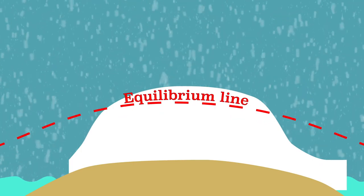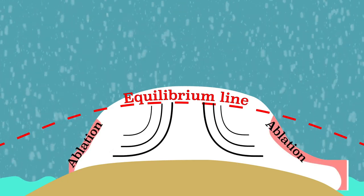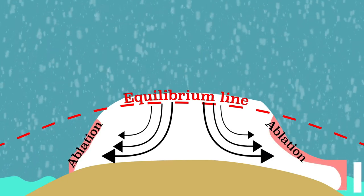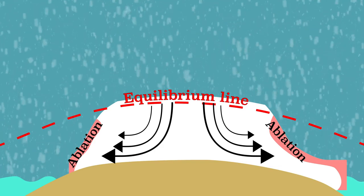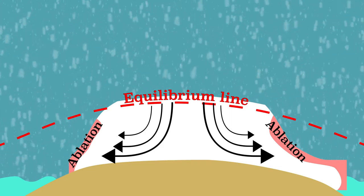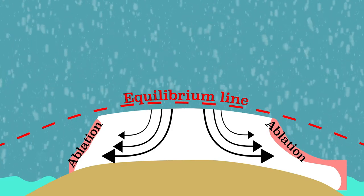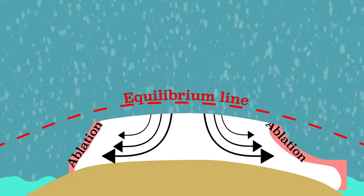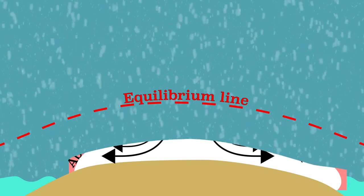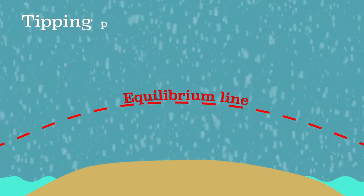The enhanced greenhouse effect makes it even warmer and the equilibrium line rises even more. Because there is more ablation, the ice sheet flows faster, making it less high. The major problem with the Greenland ice sheet arises when the entire ice sheet falls below the equilibrium line. Then there is no accumulation zone left and the ice sheet will melt in a very short time.